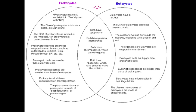Prokaryotes were the first cells; they're simple. Eukaryotes came later in evolution and they're more complex. Prokaryotes have no nuclei, whereas Eukaryotes have a nucleus. The DNA of Prokaryotes exists as a single circular strand, while the DNA of Eukaryotes exists as many strands.